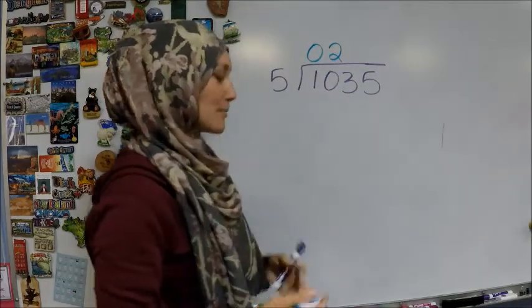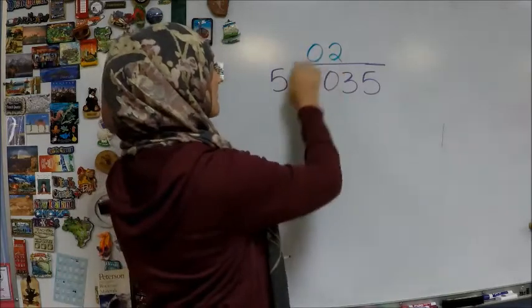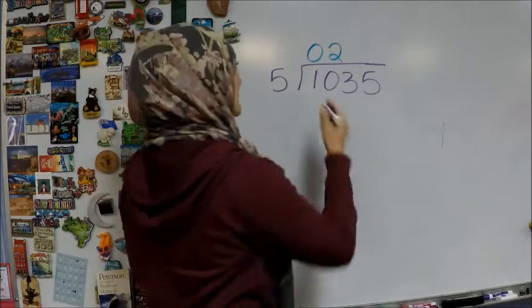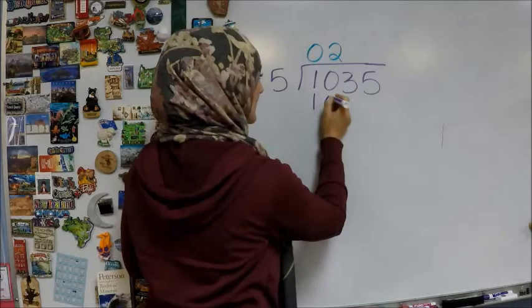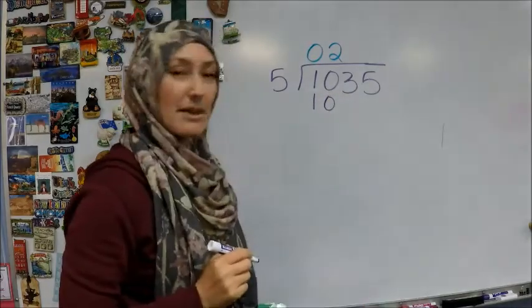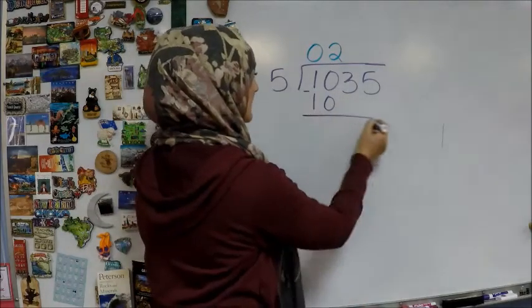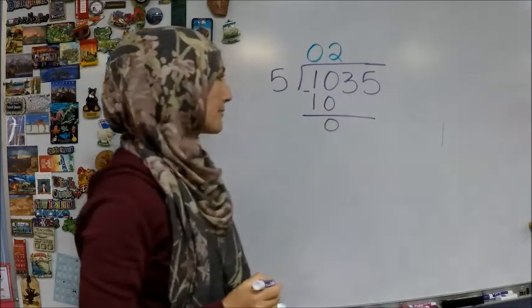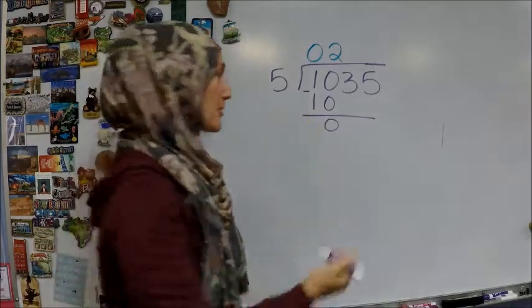Okay, so then the next step is to multiply. 2 times 5 is 10. So I will write that down underneath. My third step is to subtract. So I will subtract and get 0. And my fourth step is to bring down.